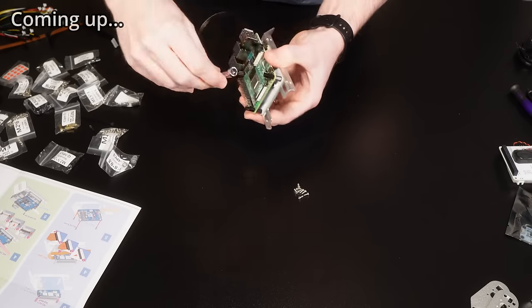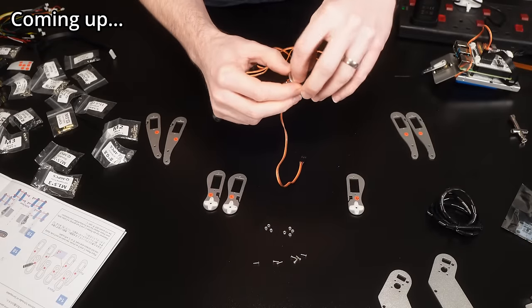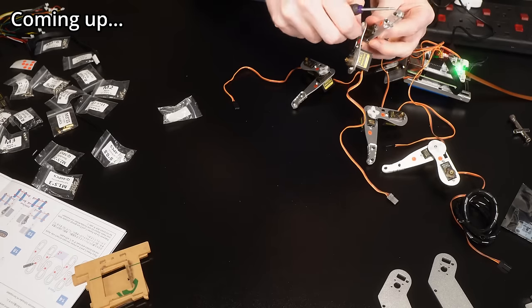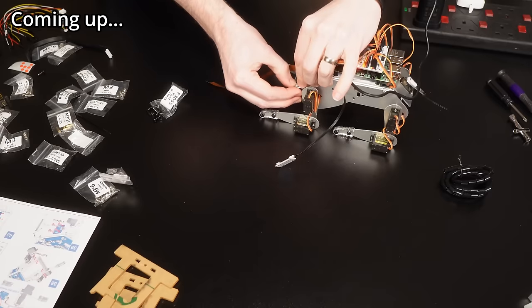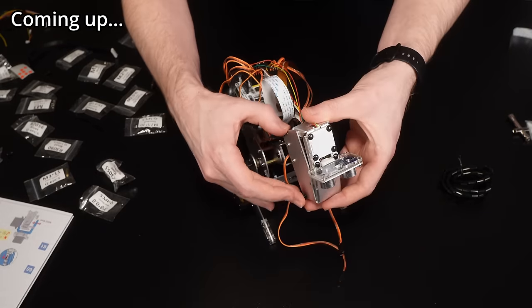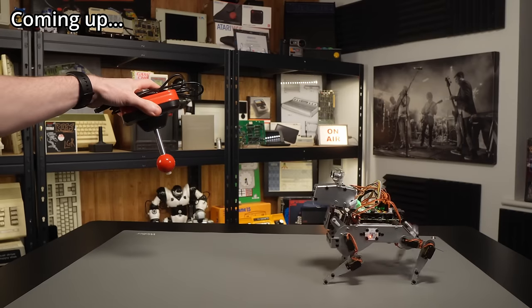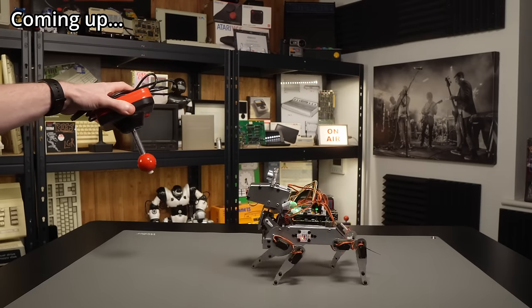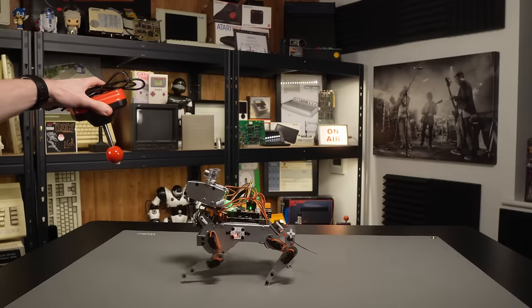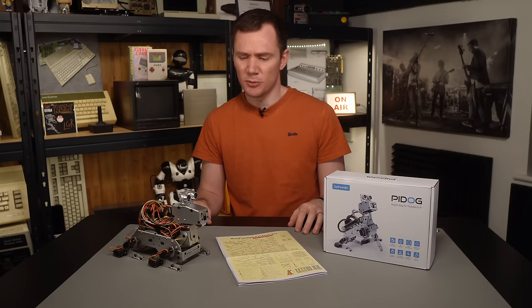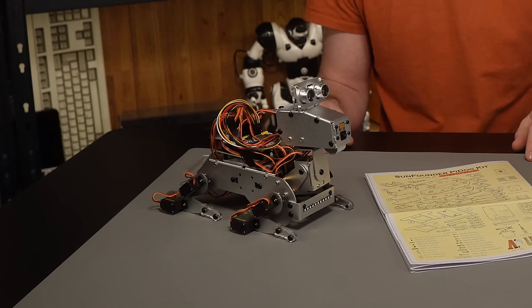So this is the SunFounder PiDog. It's a do-it-yourself kit that's powered by a Raspberry Pi. It comes with a built-in rechargeable battery, a surprisingly impressive array of sensors and outputs, and the software that runs it all is written in Python and open source under the GPLv2, so you can modify it to your heart's content. It's also quite cute for a pile of wires and metal and plastic. Well, I think so.